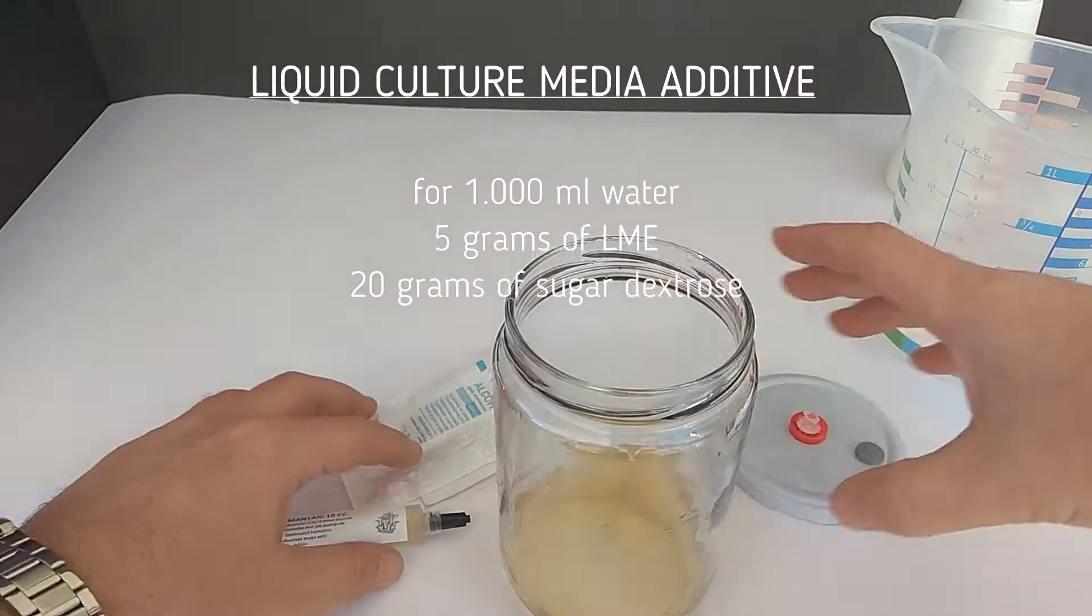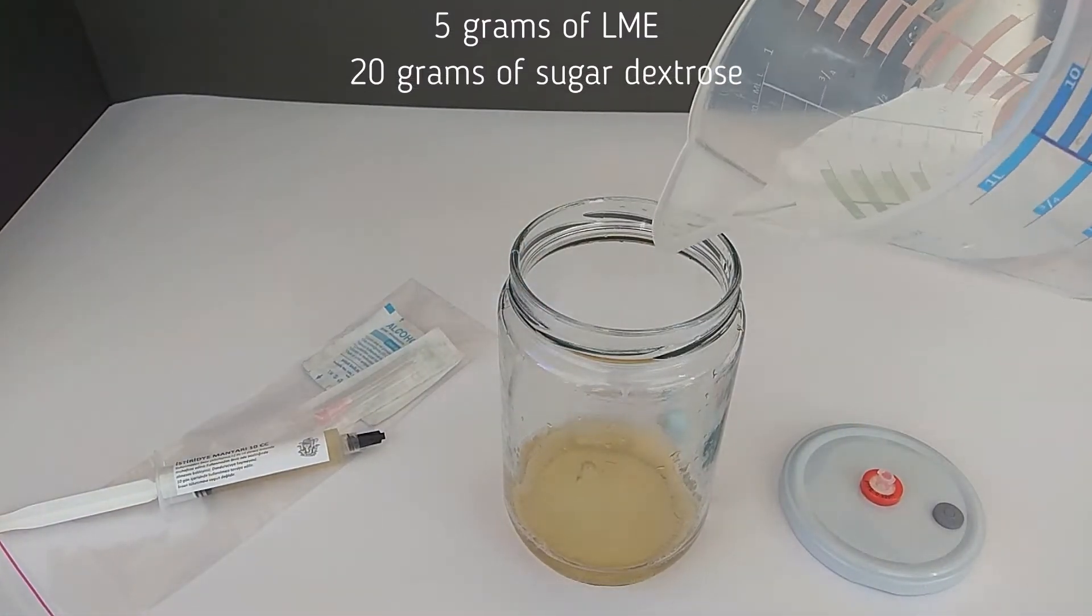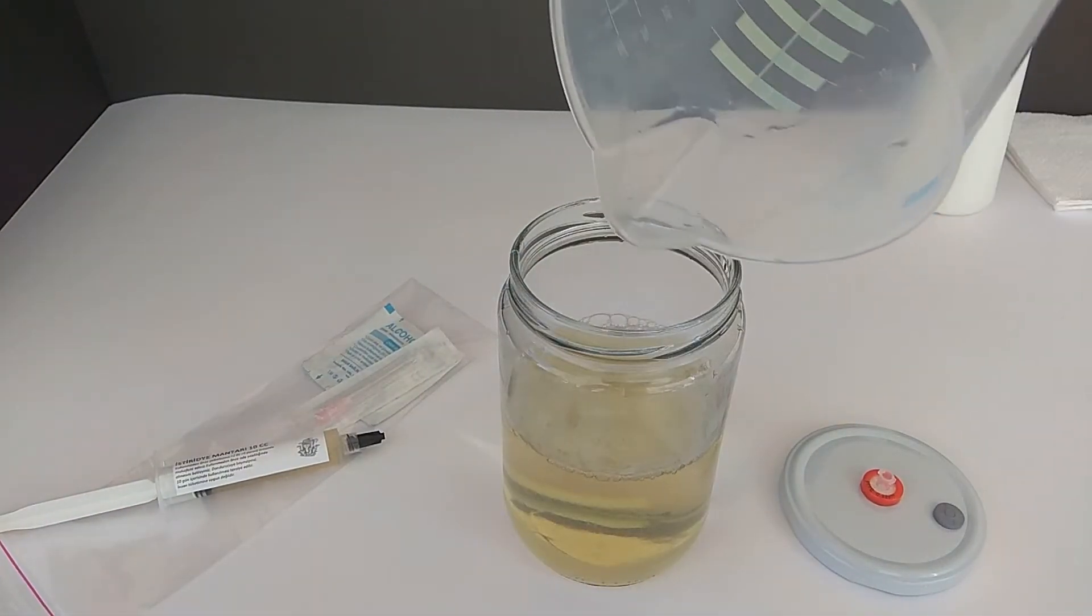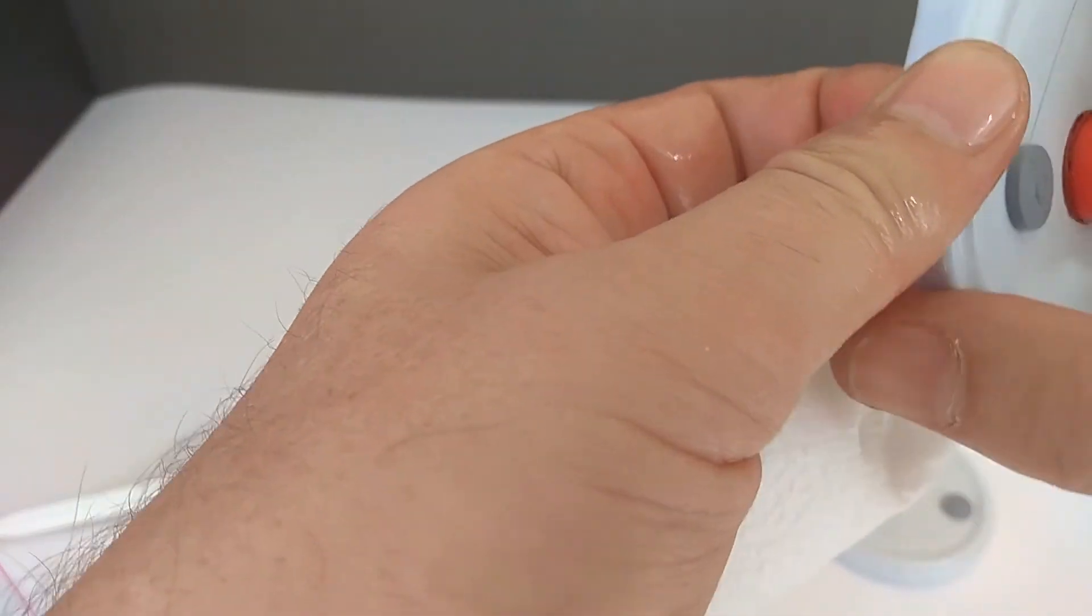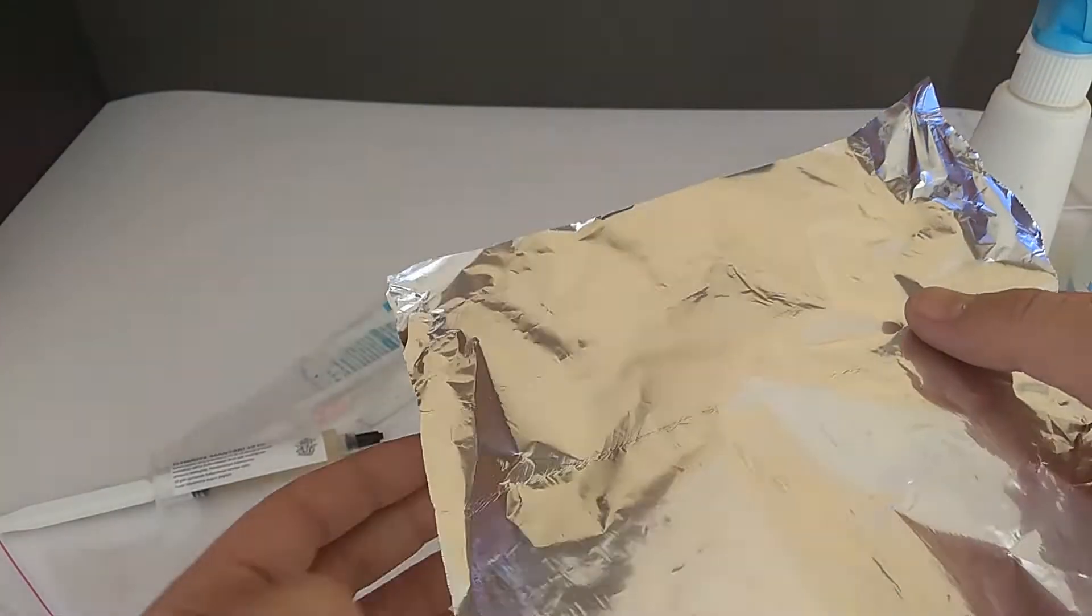We put the magnetic stirrer in your jar and pour 300ml of hot water. We thoroughly wipe the inside of our lid with an alcohol cleaning wipe and close the lid. We need to cover it with aluminum foil so that water does not come to the filter of our lid.